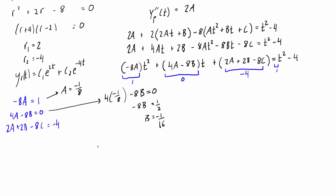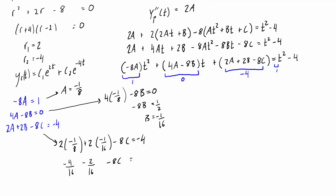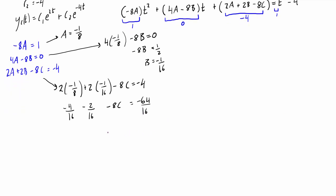Substituting A and B into the third equation: 2(−1/8) + 2(−1/16) − 8C = −4. Setting everything to a common denominator of 16: −4/16 − 2/16 − 8C = −64/16. This simplifies to −8C = −58/16, so C = 58/128, which reduces to 29/64.